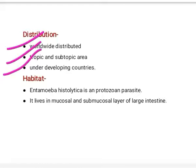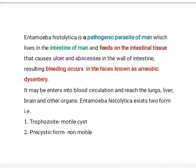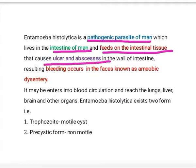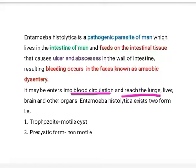It also occurs in developing countries. It is a protozoan parasite that lives in the mucosal and submucosal layer of the large intestine. Entamoeba histolytica is a pathogenic parasite of humans, living mostly in the anterior part of the large intestine — the colon region. It feeds on intestinal tissue, causing ulcers and abscesses in the intestinal wall, resulting in bleeding during defecation, known as amoebic dysentery. This parasite may also enter blood circulation and reach the lungs, liver, brain, and other organs.